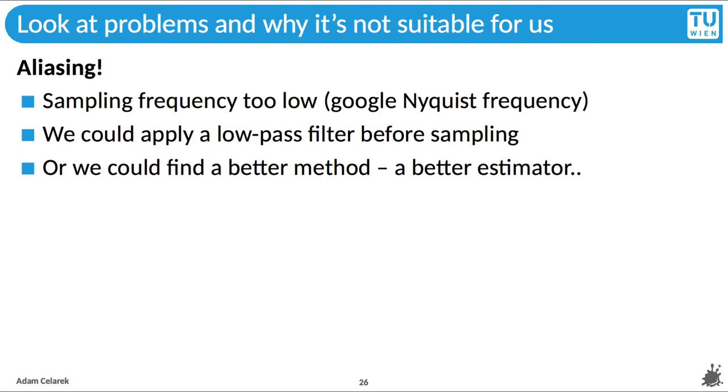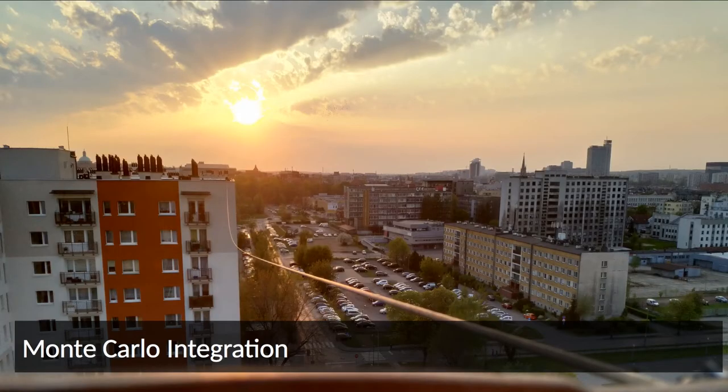Hence, the cat's eyes would hurt. A common method to combat aliasing is to apply a low-pass filter before sampling, cutting away the higher frequencies. But that would be non-trivial. And we have a better method. We will describe a better estimator, better for high-dimensional integrals at least. Monte Carlo integration, or another term would be Monte Carlo estimator for integration.